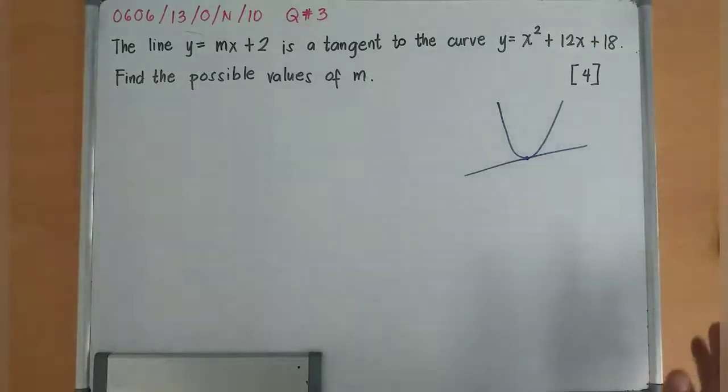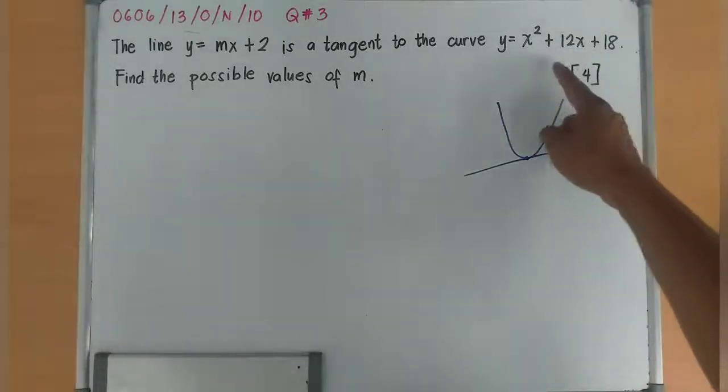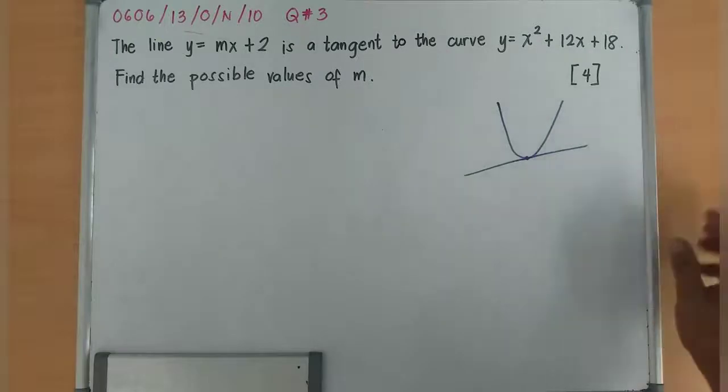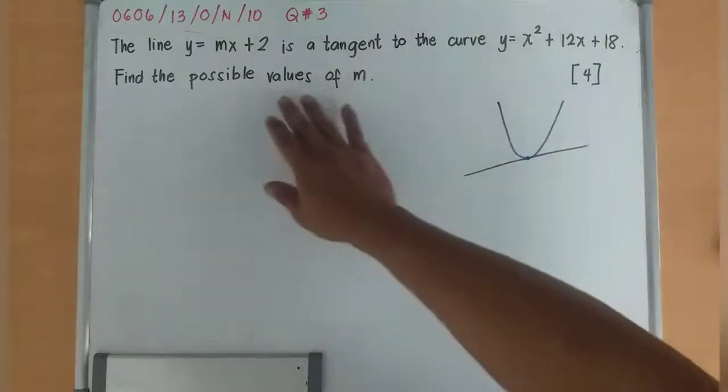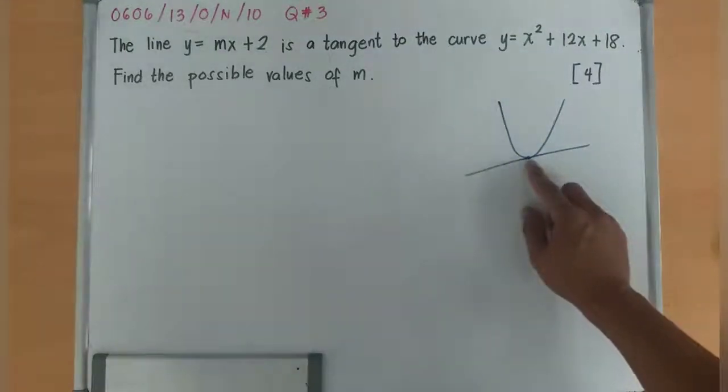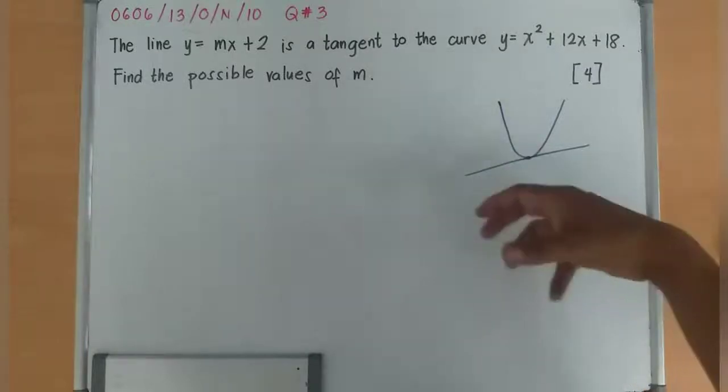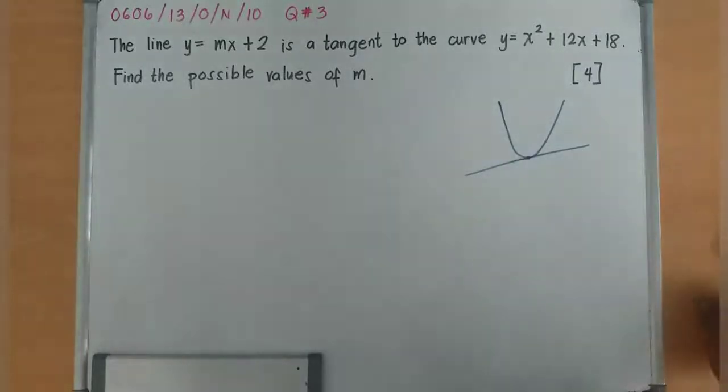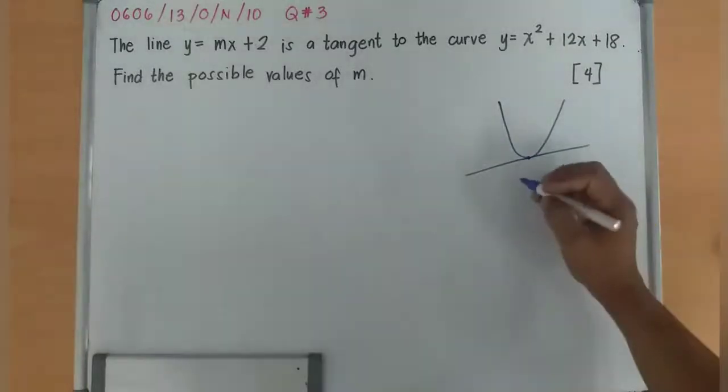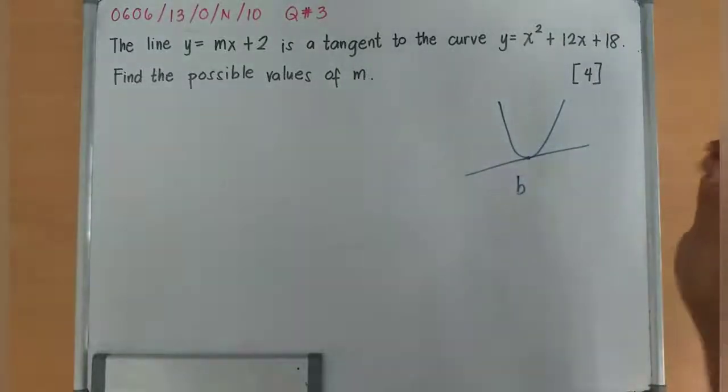So what you need to do here is to apply the idea that if I have one distinct point, it is equivalent to b² - 4ac = 0.